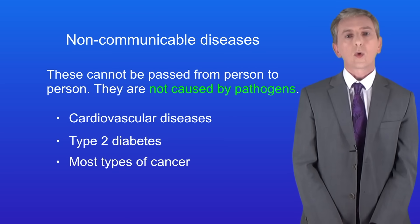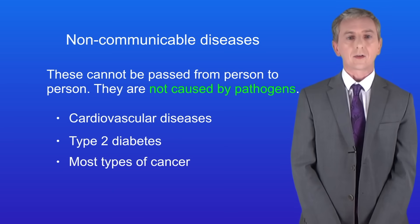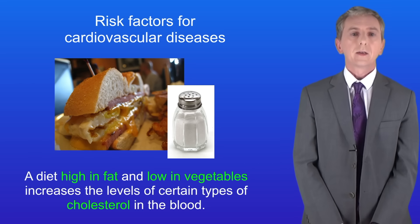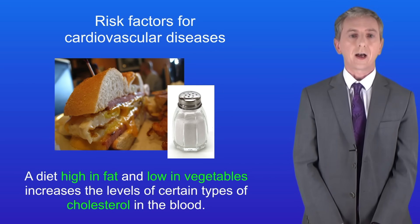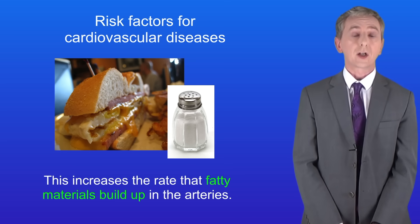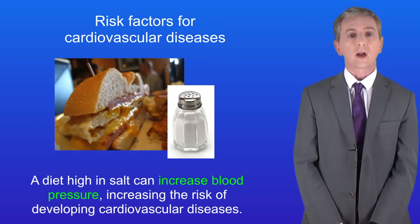In this video we're going to explore the risk factors for non-communicable diseases. Let's start with cardiovascular diseases, which includes coronary heart disease. These diseases account for over a quarter of all deaths in the UK. Diet is a major risk factor: a diet high in fat and low in vegetables increases certain cholesterol levels in the blood, increasing the rate that fatty materials build up in the arteries. A diet high in salt can also increase blood pressure, again increasing the risk of developing cardiovascular diseases.